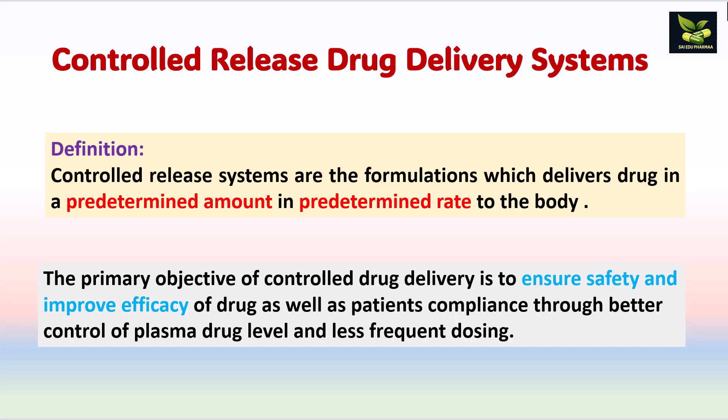Controlled release drug delivery systems are developed to deliver drug in a predetermined amount at a predetermined rate to the body. The amount or extent — how much drug is released in which time duration — is very important. This ensures safety and improves drug efficacy. Because the amount is controlled and dosing frequency is reduced, patient compliance is achieved, and constant plasma drug levels are maintained.